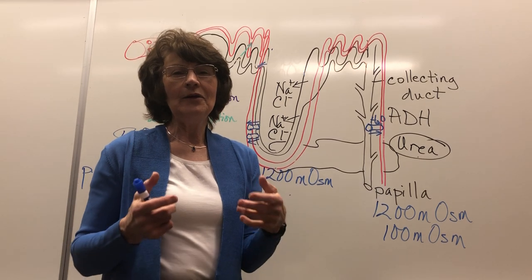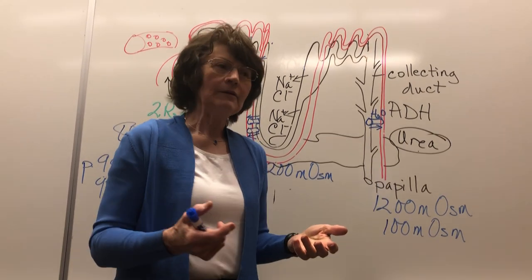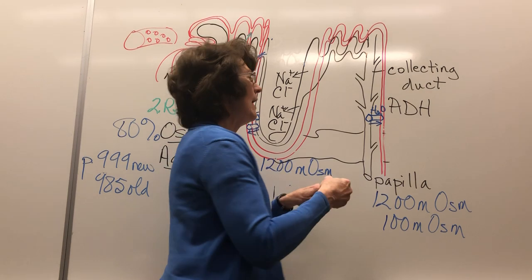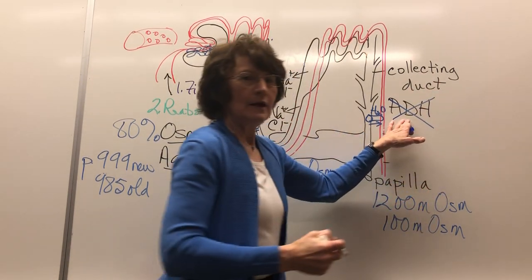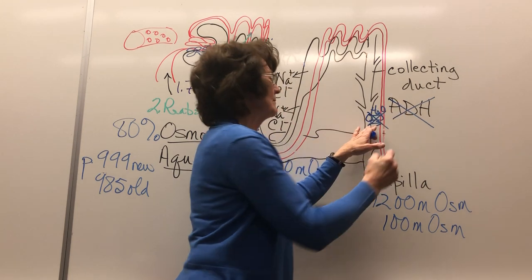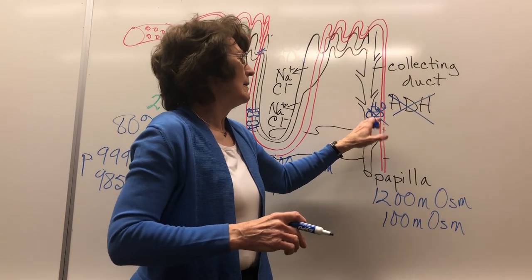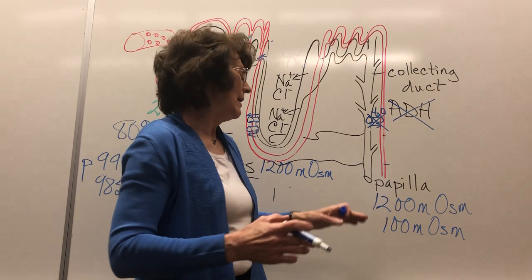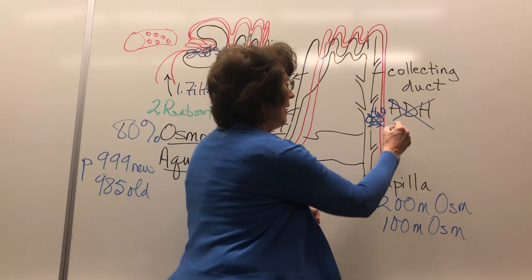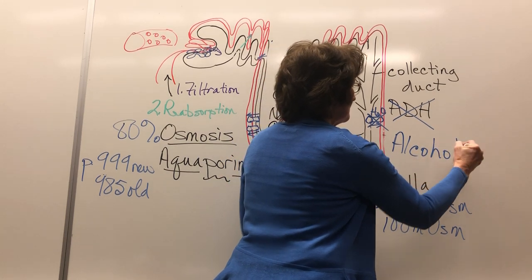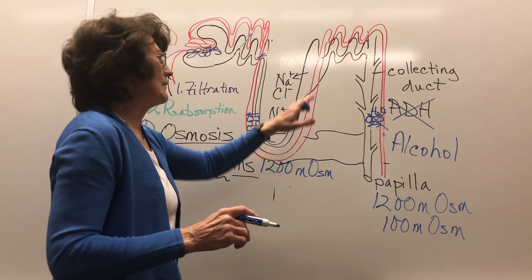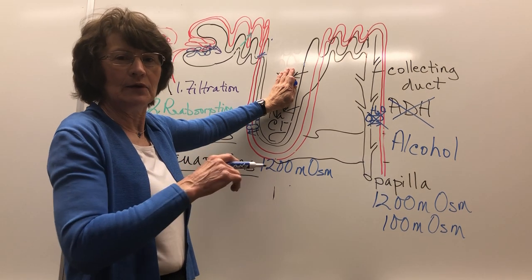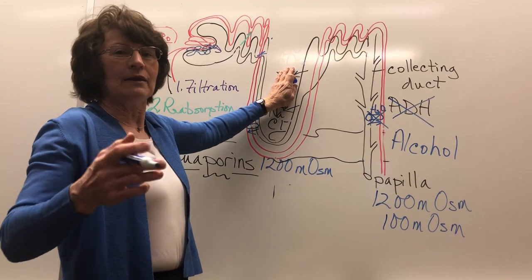Now think about alcohol. Is it a diuretic? Does it increase urine output? Yes — alcohol blocks ADH and also blocks aquaporins. So the aquaporins aren't open and water isn't being reabsorbed, leading to increased urine output. That's why alcohol is a diuretic. Also consider caffeine as a diuretic — caffeine blocks the transport of sodium and chloride, which in turn increases urine output.